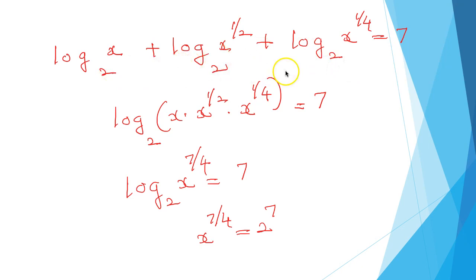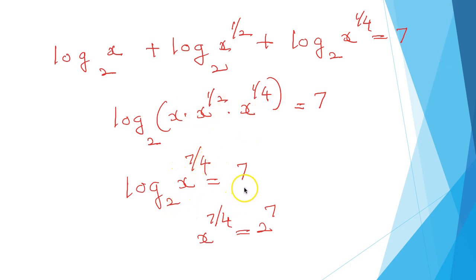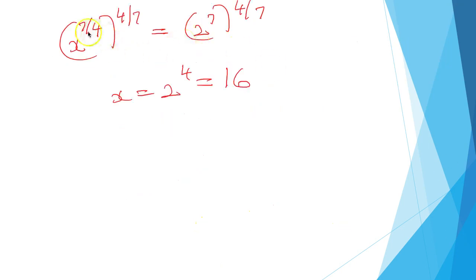Using the multiplication rule, this becomes log of x times x raised to one-half times x raised to one-quarter to the base 2 equals 7, or log of x raised to (1 plus one-half plus one-quarter) to the base 2 equals 7, giving x raised to 7 by 4 to the base 2 equals 7. So x raised to 7/4 equals 2 raised to 7. Taking the 4/7th power, x equals 2 raised to 4, which is 16.